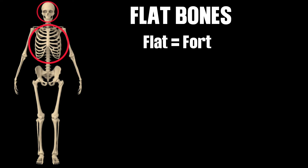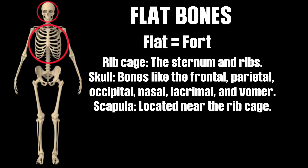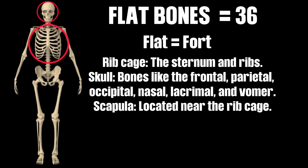Examples of flat bones include the ribcage — the sternum and the ribs — the skull with bones like the frontal, parietal, occipital, nasal, lacrimal, and vomer bone, and then the scapula, which is located close to the ribcage. Flat bones are primarily found in the ribcage and parts of the cranium, protecting organs like the heart, lungs, and brain. An average adult has 36 flat bones.